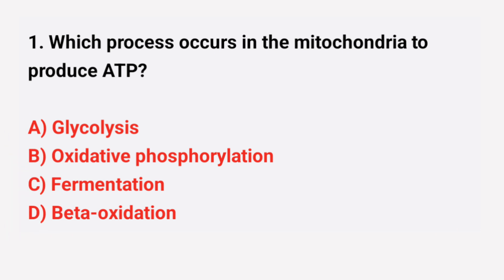Question number 1: Which process occurs in the mitochondria to produce ATP? The right answer is option B: Oxidative Phosphorylation.